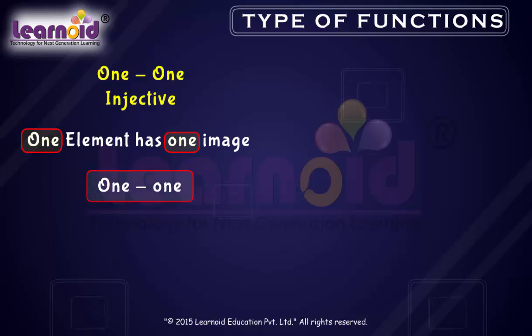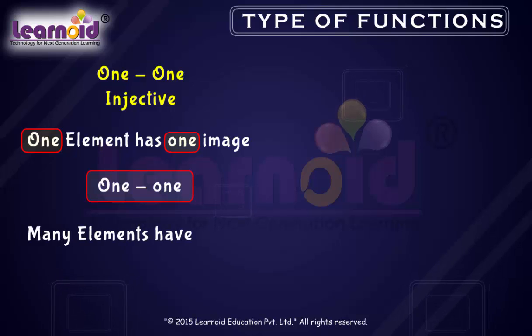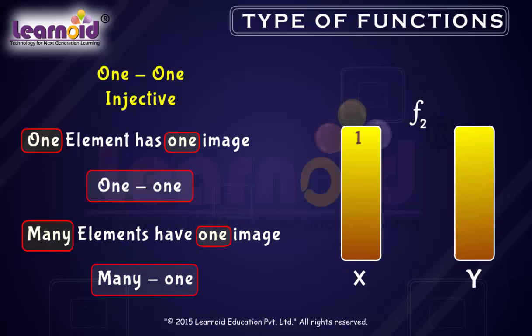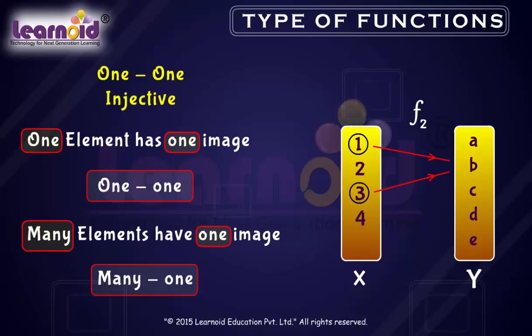The other type of function is many-one, where many elements have one image. For example, f2 is a many-one function. Elements 1 and 3 have the same image b.